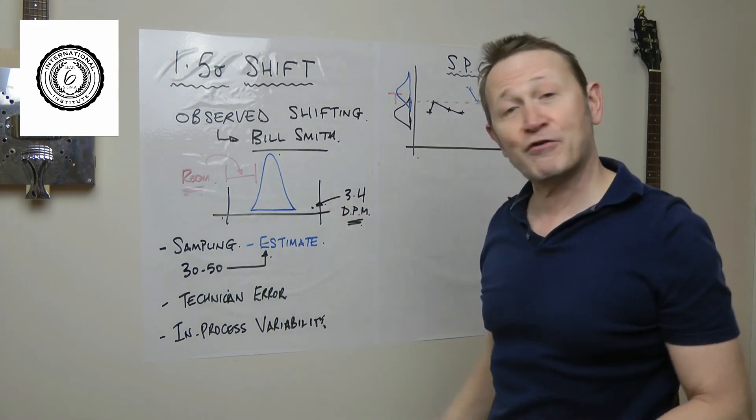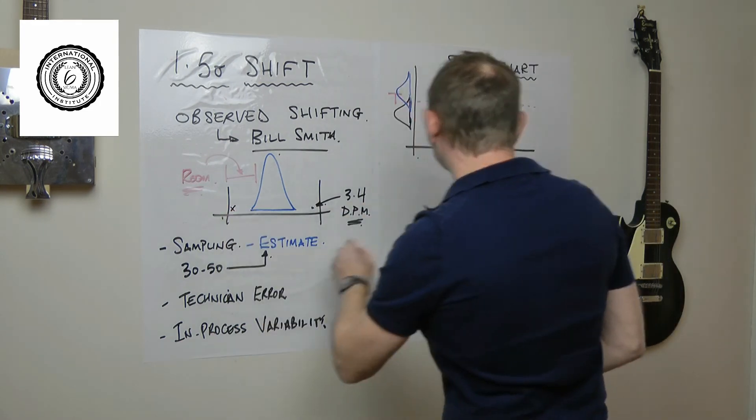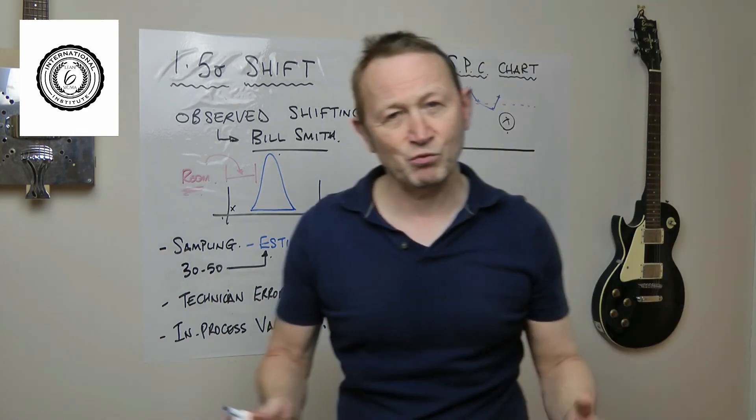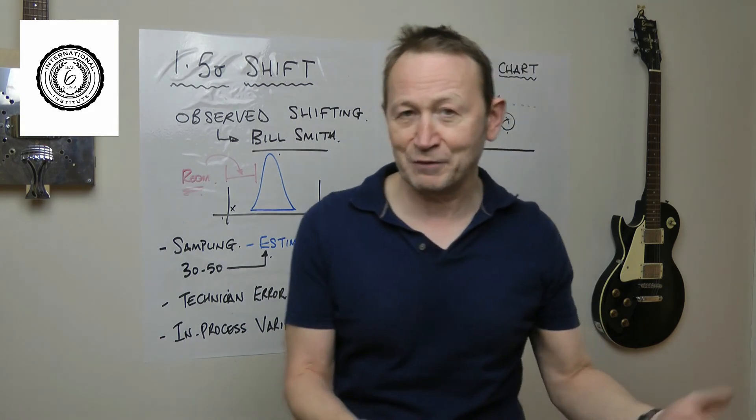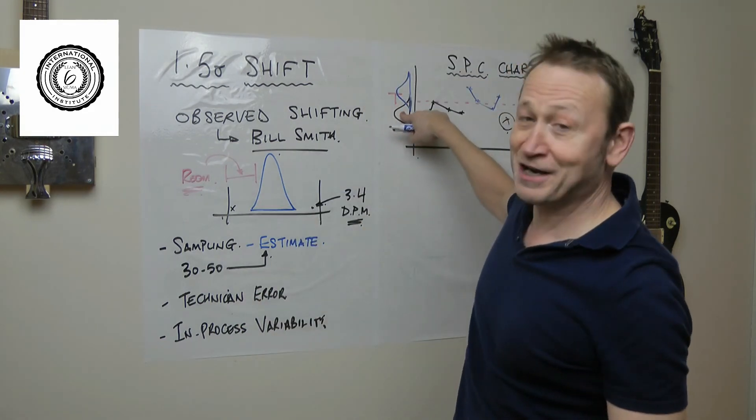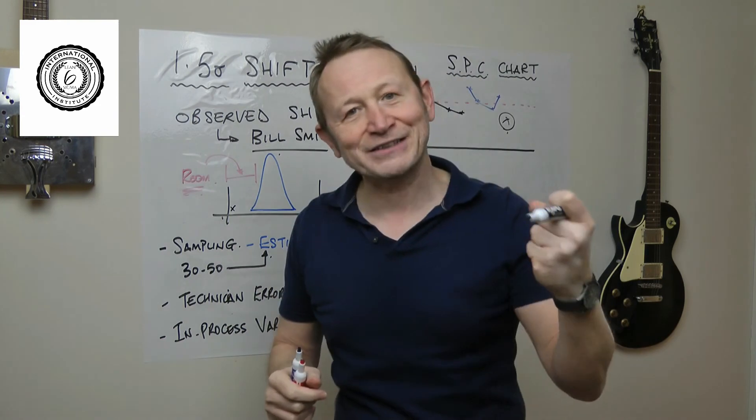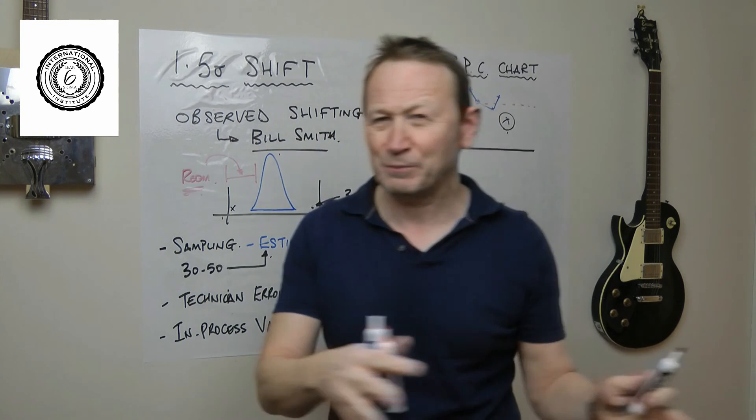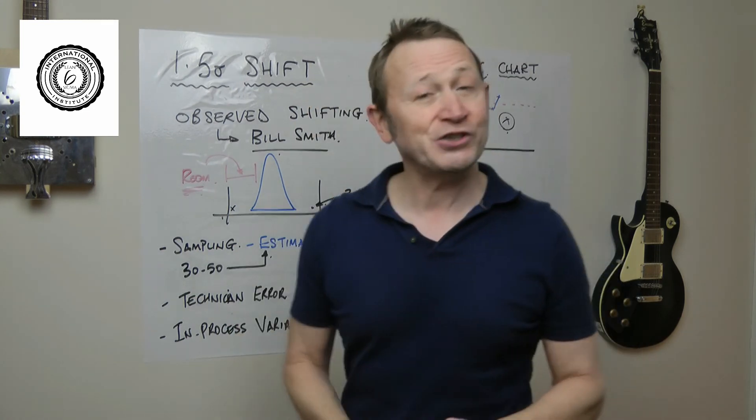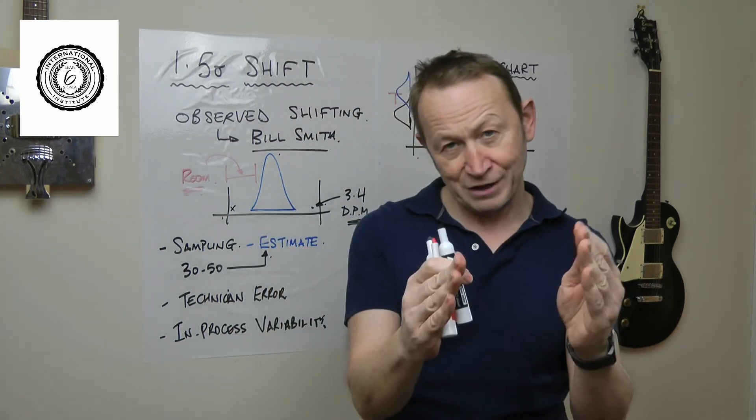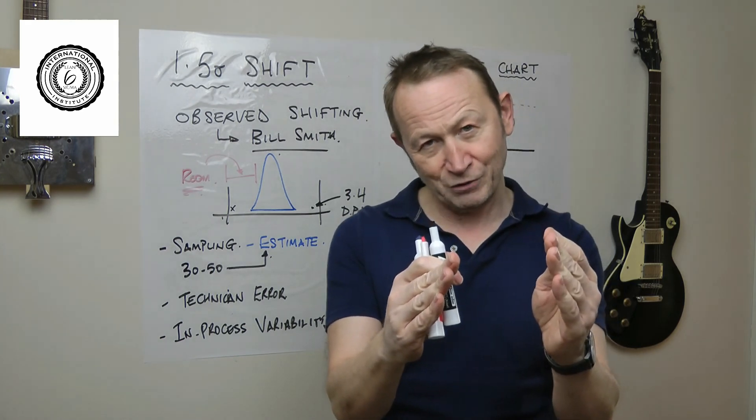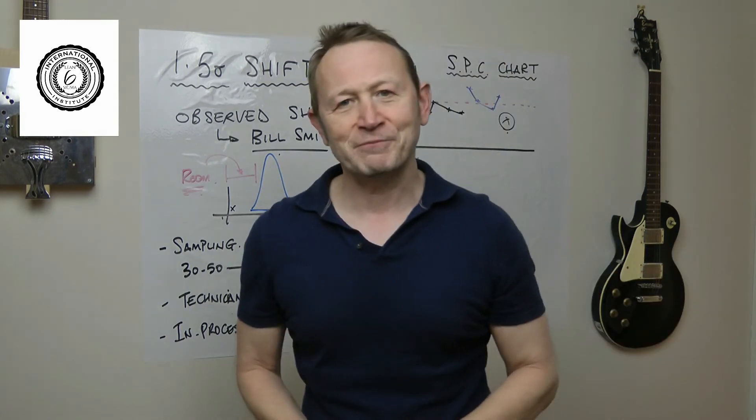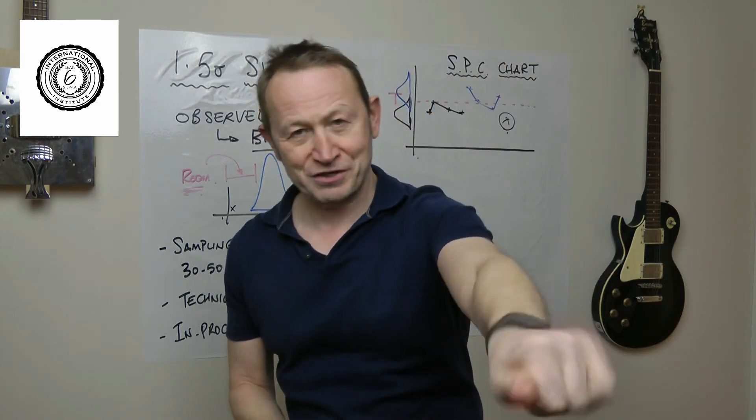Will that show up on these data points? Well it depends how far it moves. If it moves a lot then of course he might get a data point that worries him. But he might not move a lot, he might just move a bit. Because it depends which data point he gets out of this distribution. He's back to the same problem. So he's got in-process variability. Maybe the machine's warming up and cooling down, maybe changes in material. Maybe he changes a batch of material and the process just moves a little bit backwards and forwards. Machine warming, changes in material, adjustments that he's making.